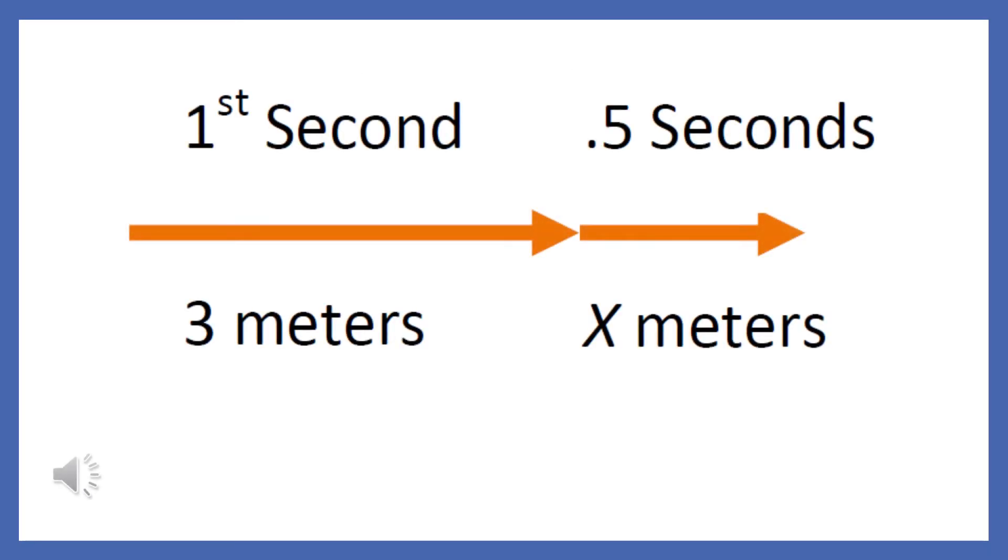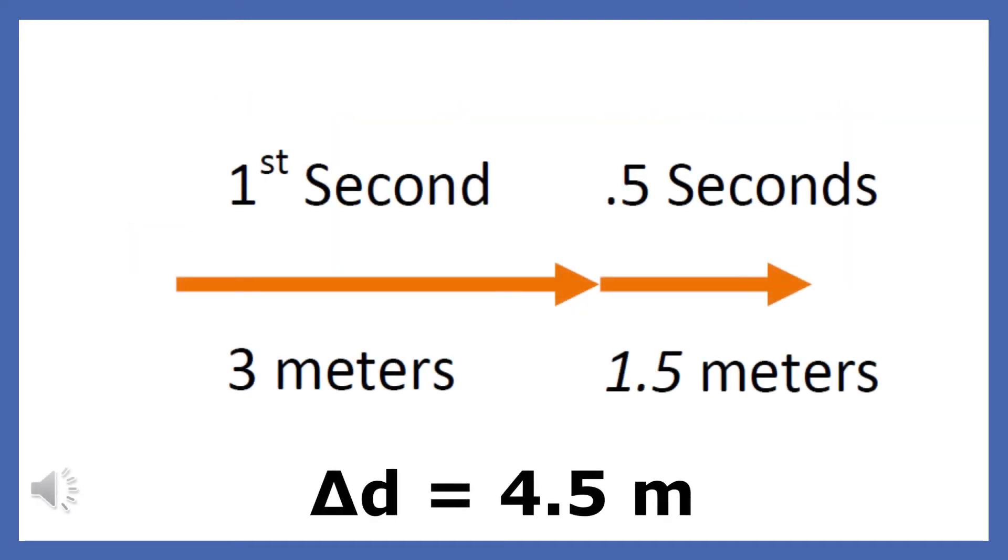Even though you will always be asked to solve problems using an equation, it's helpful to look at the same problem using a different approach. It creates a deeper understanding that you often don't get by using an equation. Since the object traveled a constant speed of 3 meters per second for 1.5 seconds, we know that it must have traveled 3 meters in the first second. At a speed of 3 meters per second, it would travel only 1.5 meters in a half a second. All totaled, the car traveled 4.5 meters, which is the same answer we got when we used the equation.